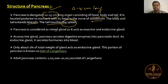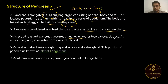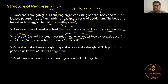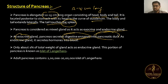Pancreas is considered a mixed gland as it acts as both exocrine and endocrine. As an exocrine gland, the pancreas secretes digestive enzymes into the pancreatic duct. Exocrine glands have a duct, while endocrine glands are ductless.